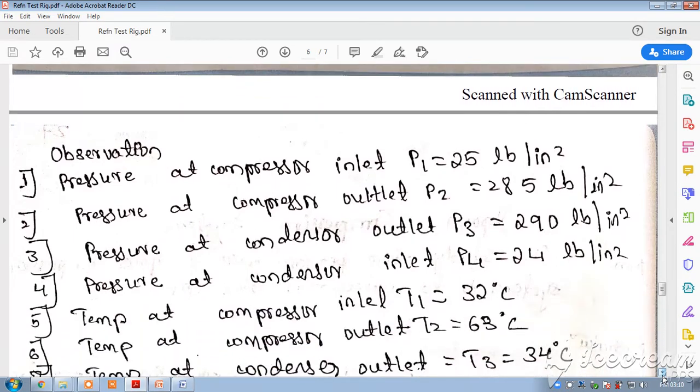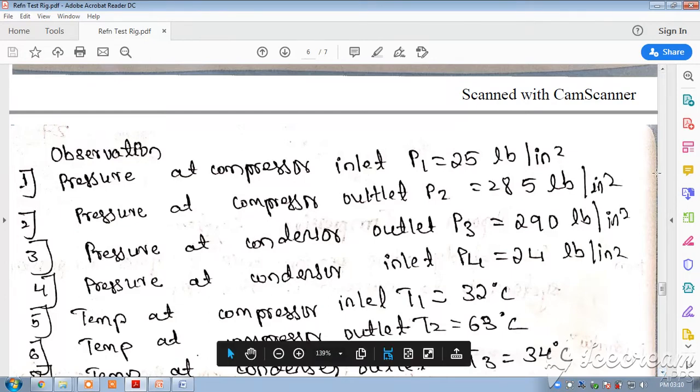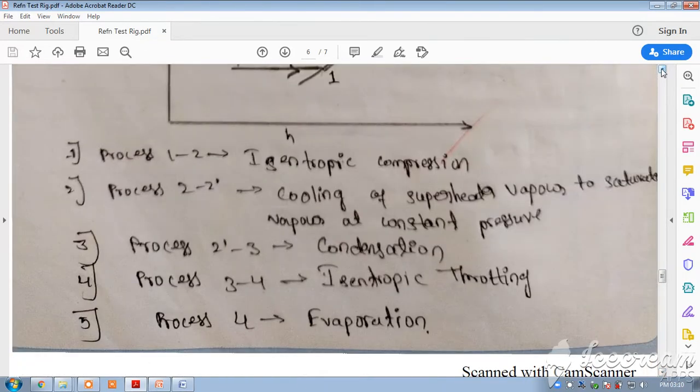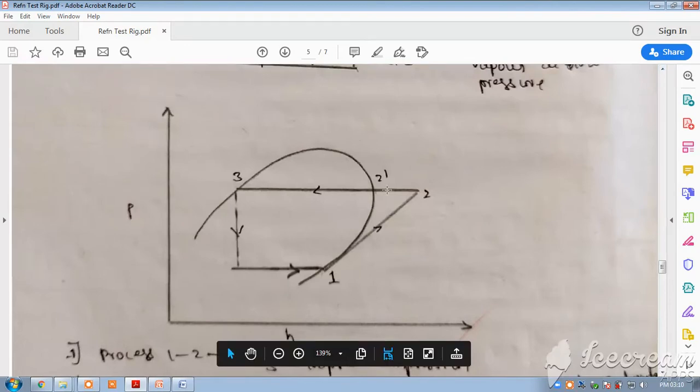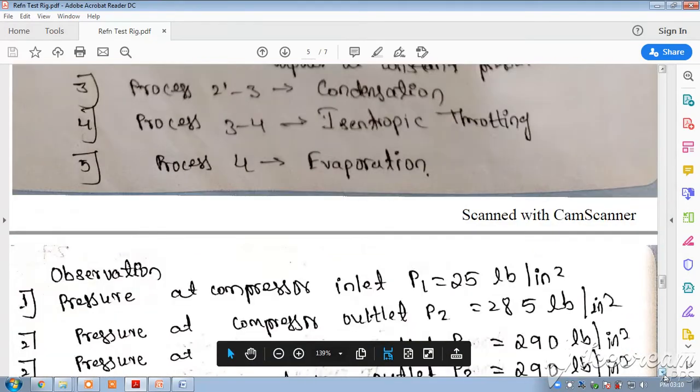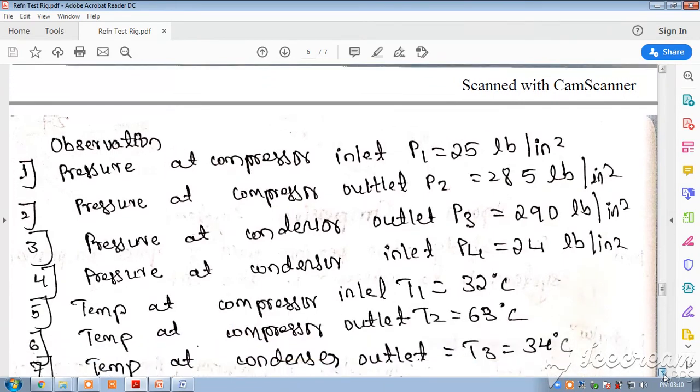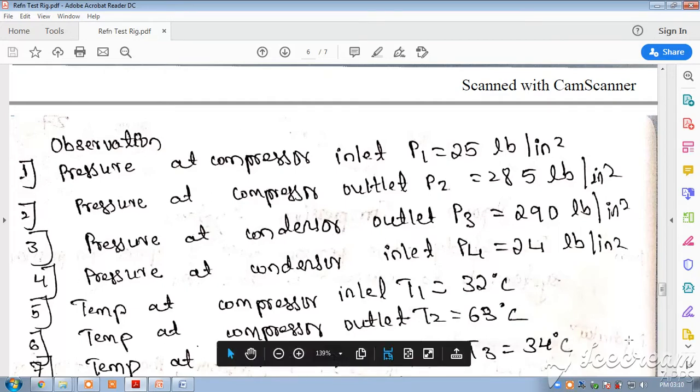We will take the readings - different readings of pressure as well as temperature. To find out this plot, to find out these points like 1, 2, 2 dash, 3, you need to have the pressure as well as the enthalpy. So what we are doing is finding out the temperature and pressure: pressure at compressor inlet, pressure at compressor outlet, pressure at condenser outlet, pressure at condenser inlet.